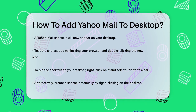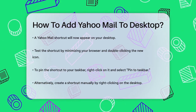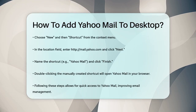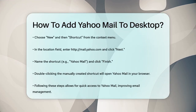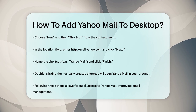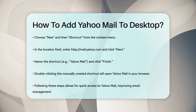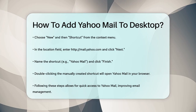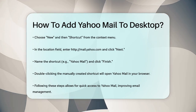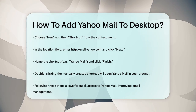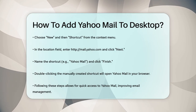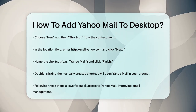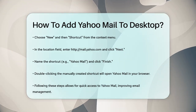Another way to do this is by creating a shortcut manually. Right-click on an empty spot on your desktop, select New, and then Shortcut. In the Type the Location of the Item field, type https://mail.yahoo.com. Click Next, give your shortcut a name like Yahoo Mail, and then click Finish. Double-clicking this shortcut will open Yahoo Mail in your default browser.